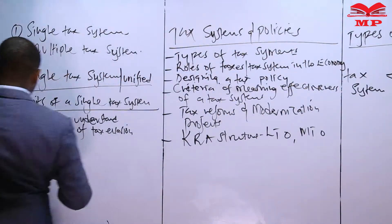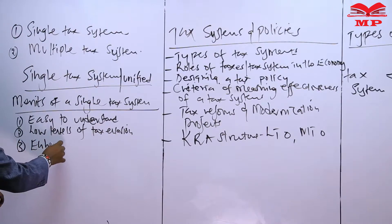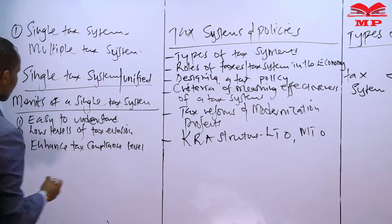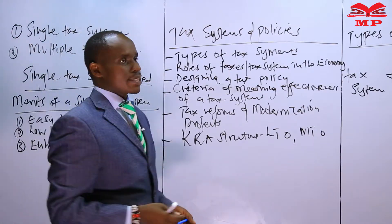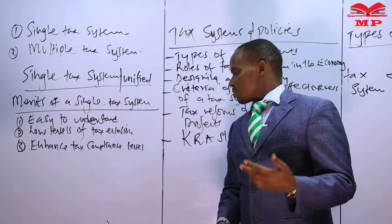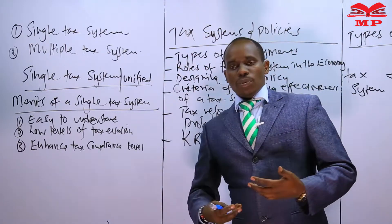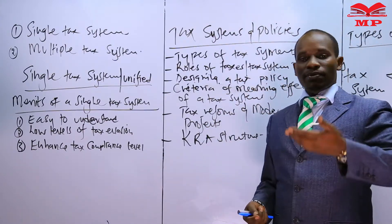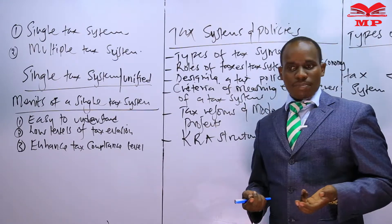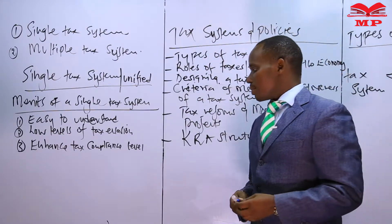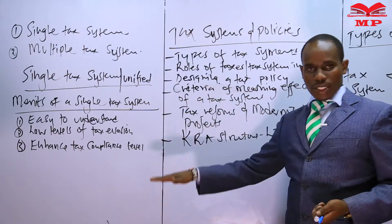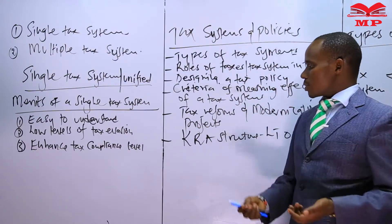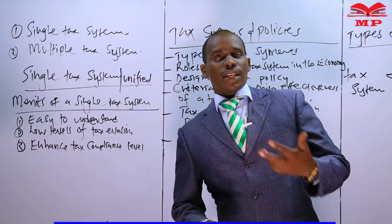Number three: this particular system can enhance tax compliance levels. Because less tax is paid, people — like in our country Kenya — will feel ready to pay. There is that readiness to pay, and that enhances the level of tax compliance. Where people feel exploited by the tax system, they do not comply and tax compliance goes down. But if they do not feel exploited, those people will feel motivated and will increase the tax compliance level in the country.